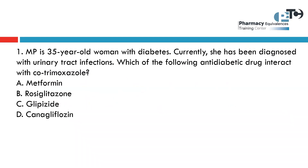Let us see the first question today, which is a 35-year-old female with diabetes. She has been diagnosed with a urinary tract infection. Which of the following antidiabetic drugs interacts with cotrimoxazole? Cotrimoxazole is sulfamethoxazole plus trimethoprim. What is the problem here — with metformin, rosiglitazone, glipizide, or canagliflozin?